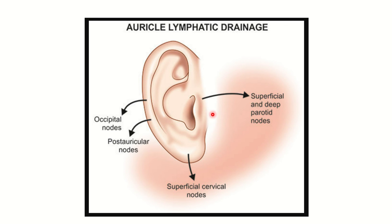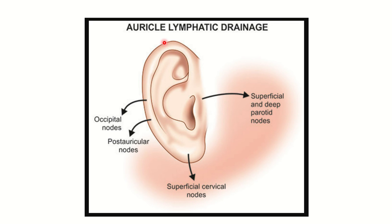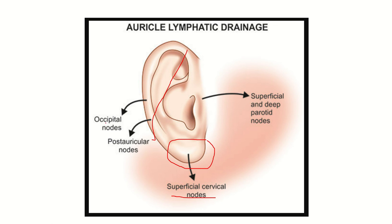Here is the auricle lymphatic drainage. We can see the lymphatic supply of the auricle. The anterior part — anterior to the tragus — drains to the superficial and deep parotid nodes. From the ear lobule, we can see it drains into the superficial cervical lymph node. The large posterior part drains into the occipital node and post-auricular node.